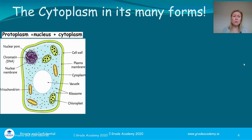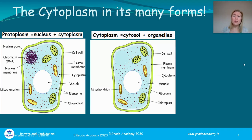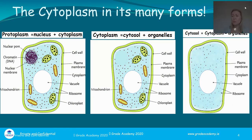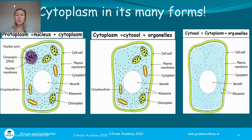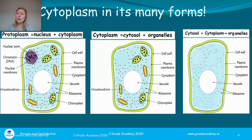The protoplasm is the living part of the cell — it includes the nucleus, so that word describes literally everything in the cell. The cytosol is something more specific: it's the cytoplasm without any of the organelles. Looking at the diagram, the cytosol is the cytoplasm missing the chloroplasts, the nucleus, the mitochondria, and the ribosomes. The cytosol is a really important term when talking about respiration, because that's where glycolysis begins.